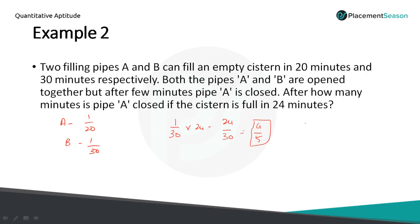Total work equals 1. 1 minus 4 by 5 equals 1 by 5. This 1 by 5 is filled by A. The 1-minute work of A is 1 by 20, and it takes N minutes to complete 1 by 5. So N equals 20 by 5, which is 4. Pipe A is closed after 4 minutes.